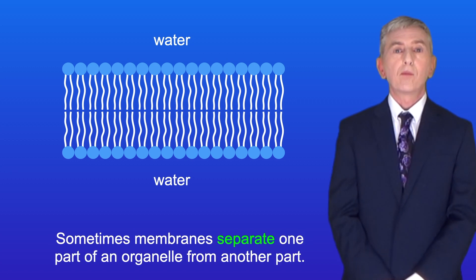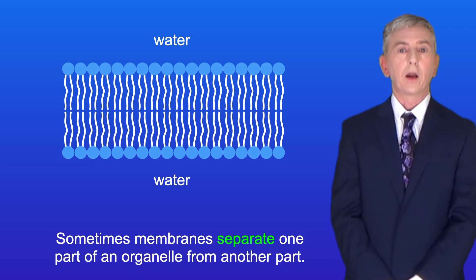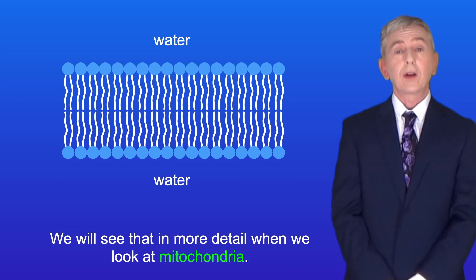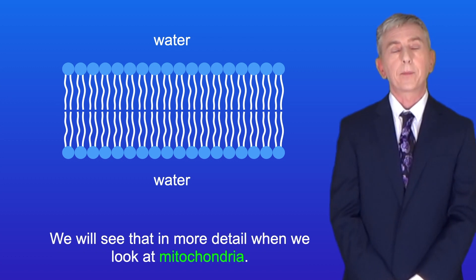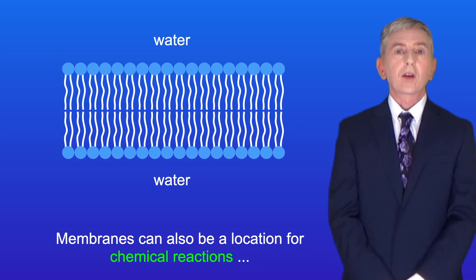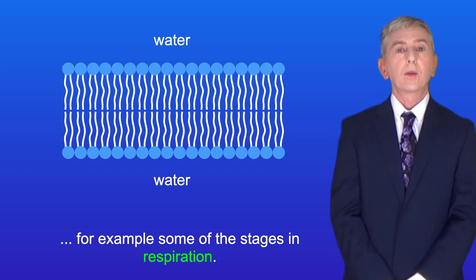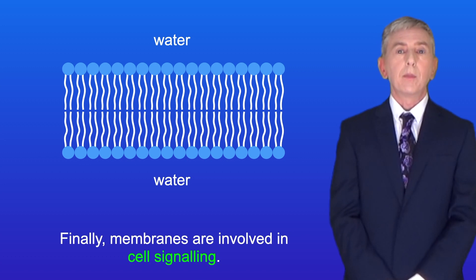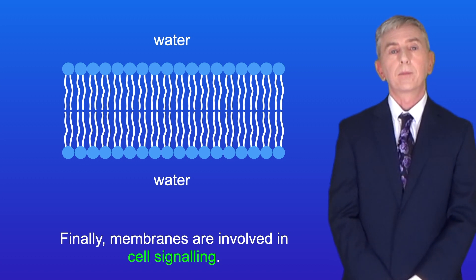Sometimes membranes separate one part of an organelle from another part, and we'll see that in more detail when we look at mitochondria. Membranes can also be a location for chemical reactions, for example some of the stages in respiration. And finally membranes are involved in cell signalling.